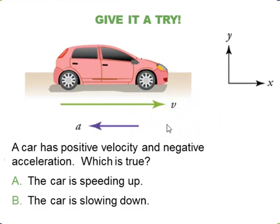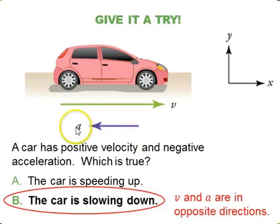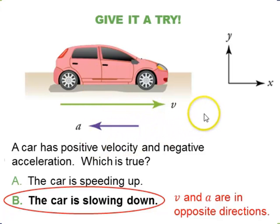If velocity is positive and acceleration is negative, is the car speeding up or slowing down? The car is slowing down, because the velocity and acceleration vectors are in opposite directions.